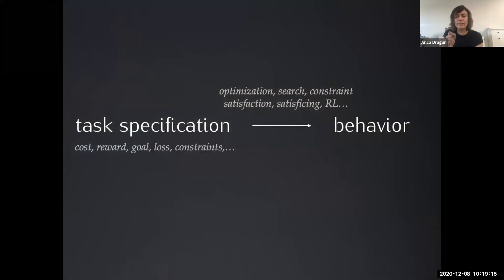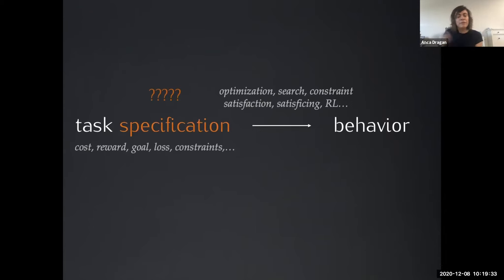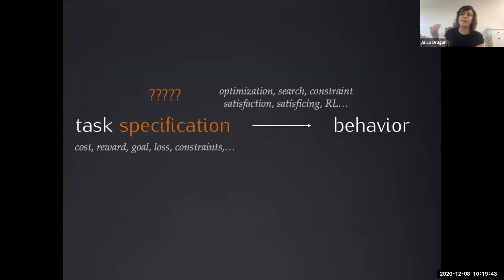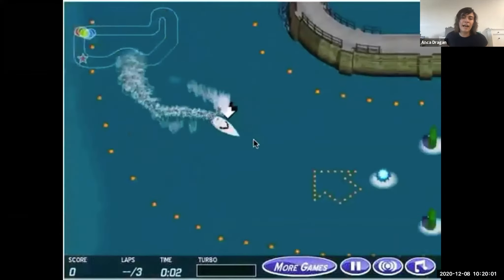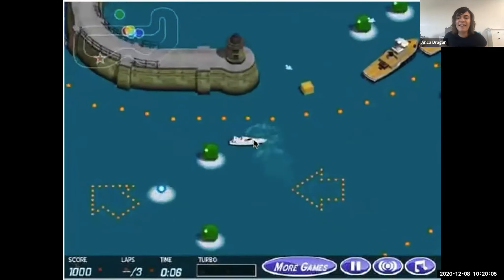We're getting good at task-specific mapping of task specifications — I use rewards, but you can use constraints — and turning them into behavior by optimizing, satisfying, doing reinforcement learning, whatever your method of choice is. But what we often sweep under the rug is just how hard it is to write down that task specification itself. How do you capture comfort for an autonomous car? How do you trade off between safety and efficiency and not crossing double yellow lines? We sometimes think constraints will save us, but they're just as bad — what threshold do you set on the probability of a collision?